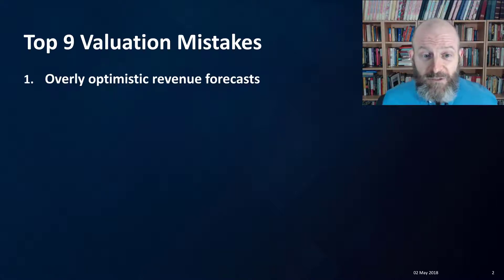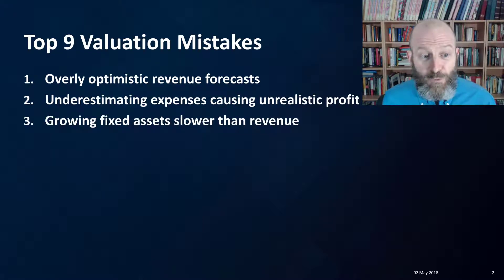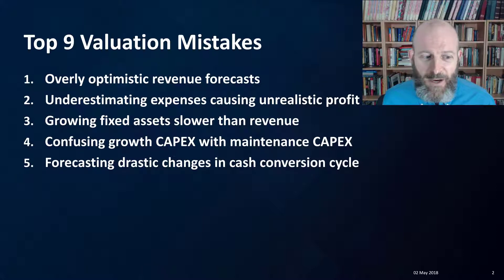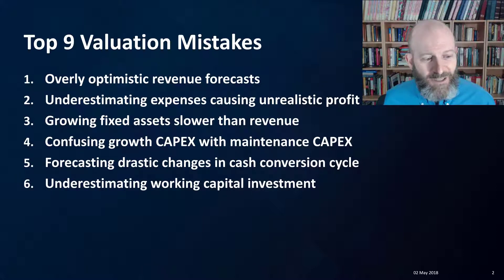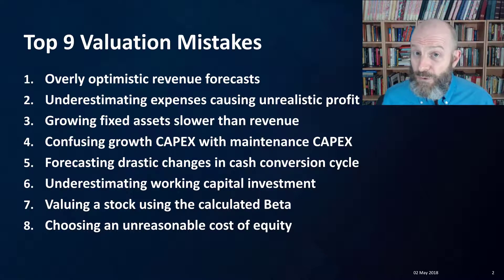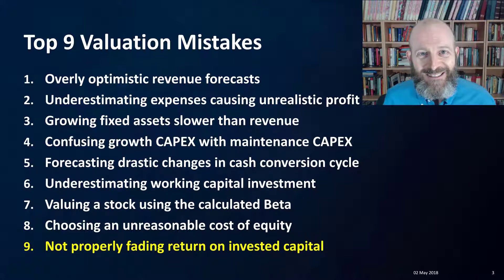Number one is overly optimistic revenue forecast. Number two is underestimating expenses causing unrealistic profit. Number three is growing fixed assets slower than revenue. Number four is confusing growth capex with maintenance capex. Number five is forecasting drastic changes in the cash conversion cycle. Number six: underestimating working capital investment. Number seven: valuing a stock using the calculated beta. Number eight: choosing an unreasonable cost of equity. And number nine: not properly fading return on invested capital.